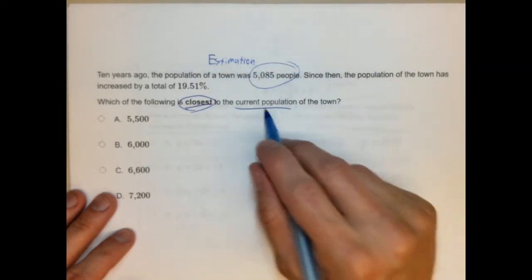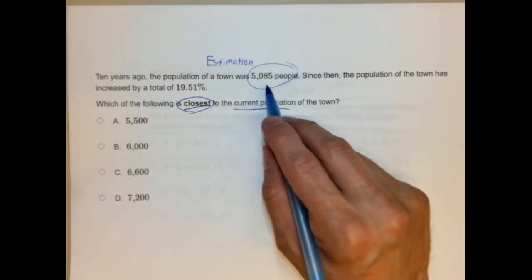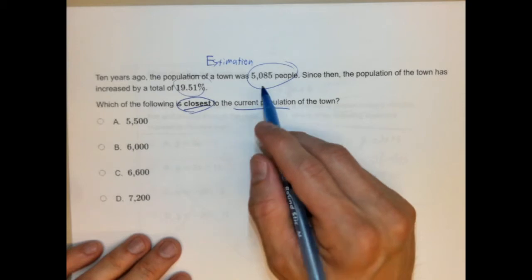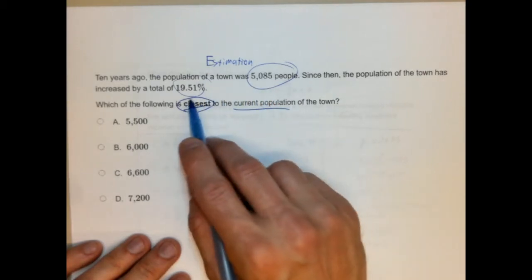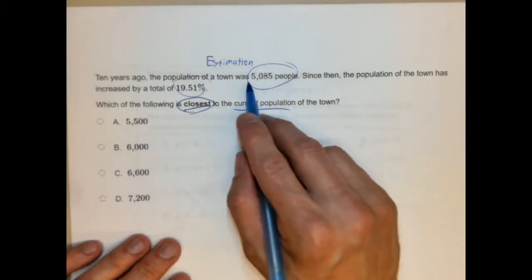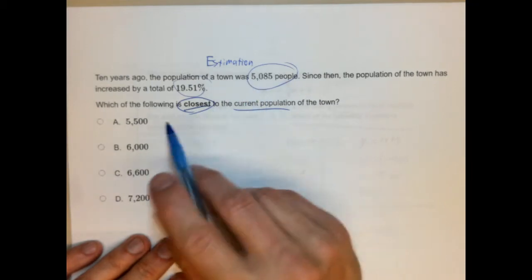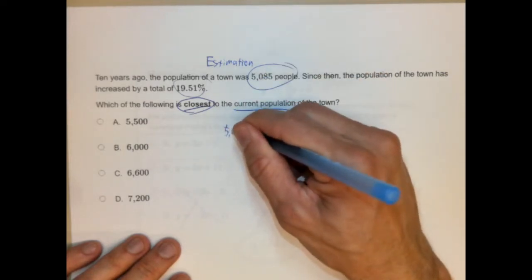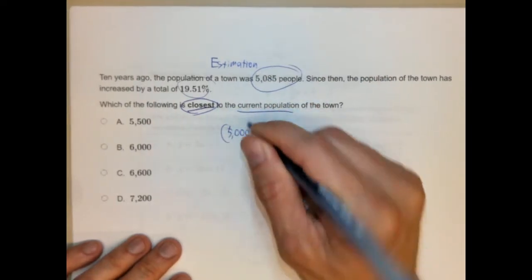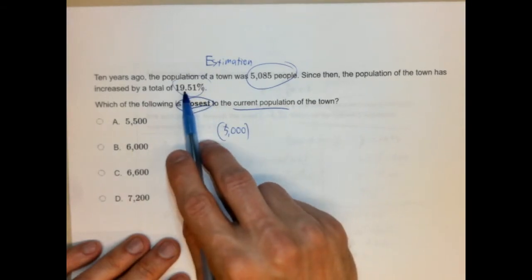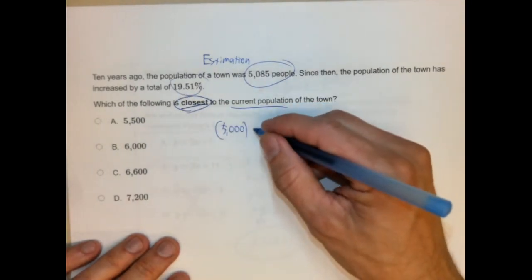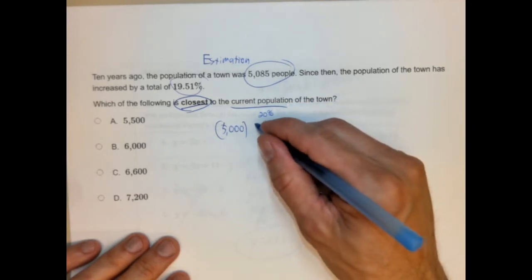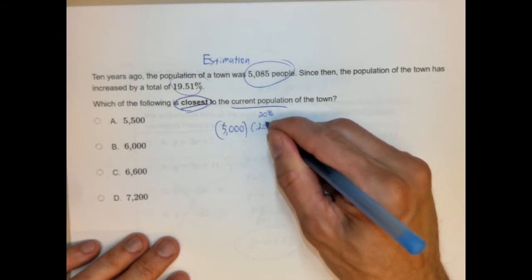We're given the number of people 10 years ago, and it went up by almost 20%. We're trying to figure out what it's currently at. So we know what it started at. We know the percentage by which it increased. We just don't know what it ended up with. So I'm immediately going to estimate. I'm going to change this to 5,000. Now, the less we move the numbers, the better off we're going to be. So I'm going to move this to 5,000 people. And originally when I solved this, I actually moved this to 19 and a half percent, but I'm going to just go ahead to 20%.